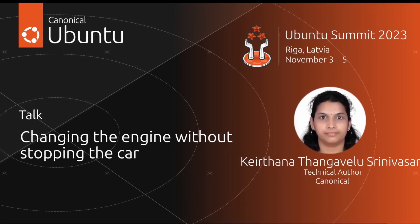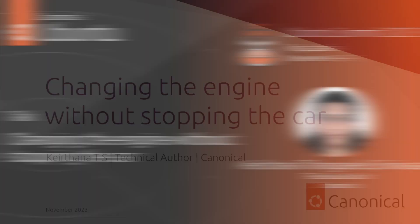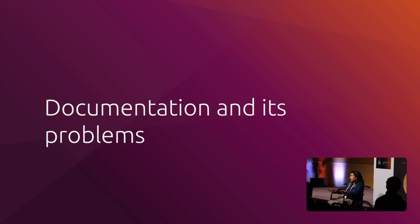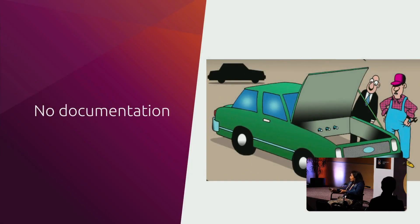The title of my talk today is 'Changing the Engine Without Stopping the Car' — with respect to documentation. Many of you may think that product documentation in open source has very different issues than proprietary documentation, because typically there is an army of authors manning the documentation and they may have easy access to fancy tools. But that's not the case, because it doesn't matter how many people are behind the documentation. The most common issue I see in open source documentation is the engine missing in the car — there is no good documentation to start with.